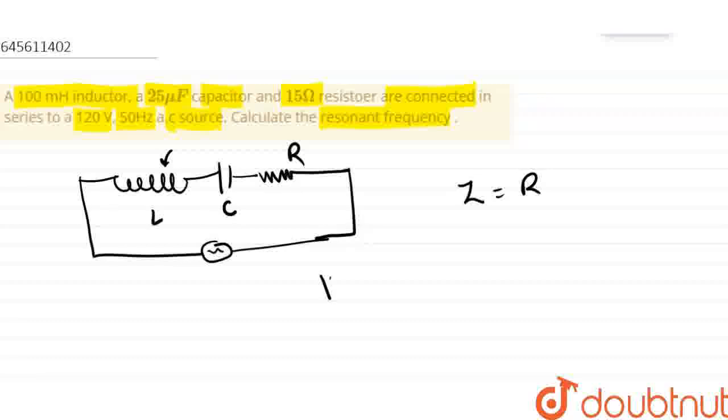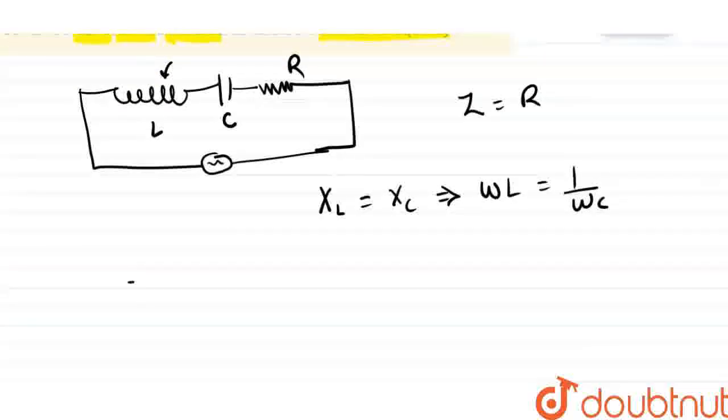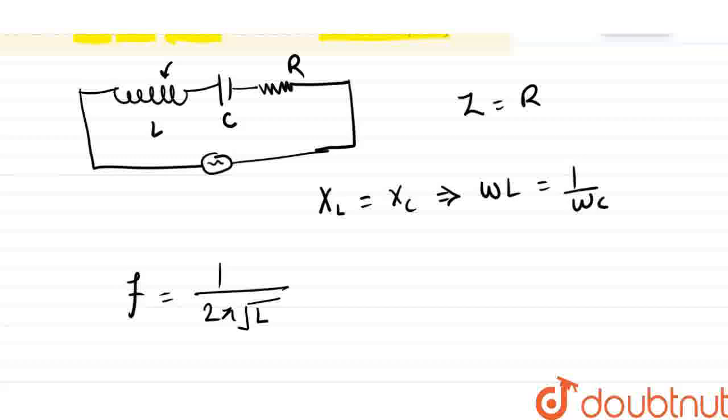Omega L equals 1 by omega C. From this logic, this formula gives us the frequency. The frequency formula becomes 1 by 2 pi root of LC. Now we'll substitute values from our question, so resonant frequency will be: